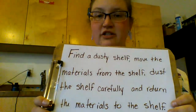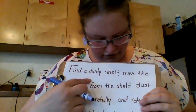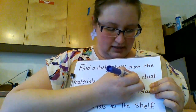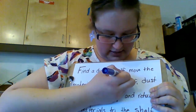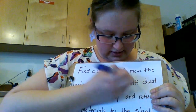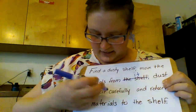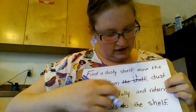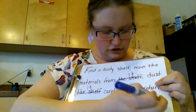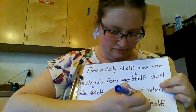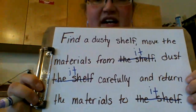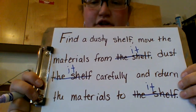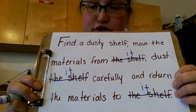Let me show you what we need to do to make it a little better. First I would say: find a dusty shelf, move the materials from it — instead of the shelf we're going to say it — dust it carefully, and return the materials to it. So now my sentence says: find a dusty shelf, move the materials from it, dust it carefully, and return the materials to it.